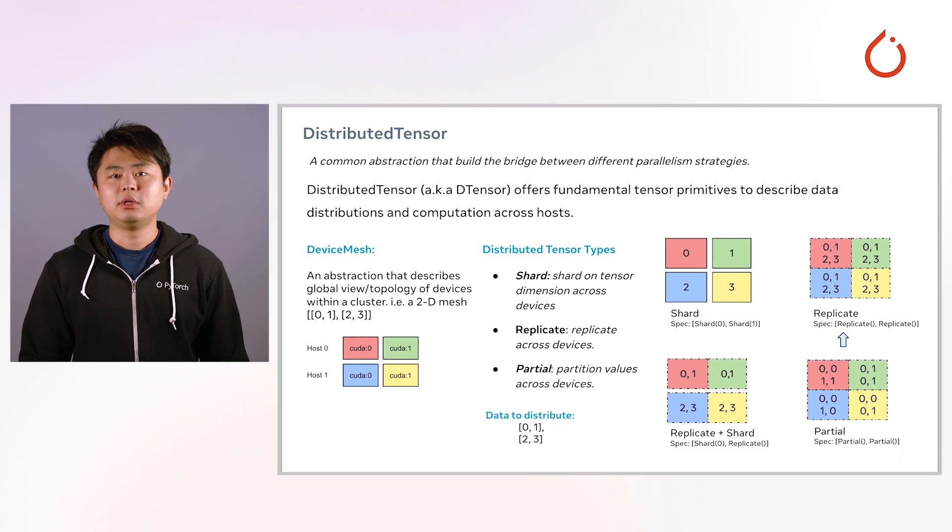With these two concepts, we can distribute a tensor in different ways. For example, we can shard a tensor with each piece on separate devices, we can replicate a tensor across all devices, or we can even shard a tensor on a set of devices then replicate this sharded tensor on another set of devices.